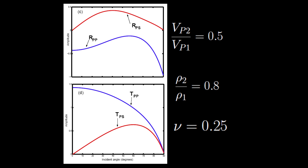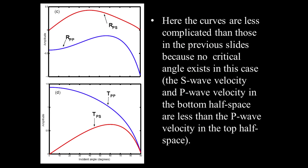Example 3 shows reflection and transmission coefficients for a case in which VP2/VP1 equals 0.5, density2/density1 equals 0.8, and Poisson's ratio equals 0.25 for both half spaces. Here the curves are less complicated than those in the previous two examples, mainly because no critical angle exists in this case. The S wave velocity and P wave velocity in the bottom half space are less than the P wave velocity in the top half space.